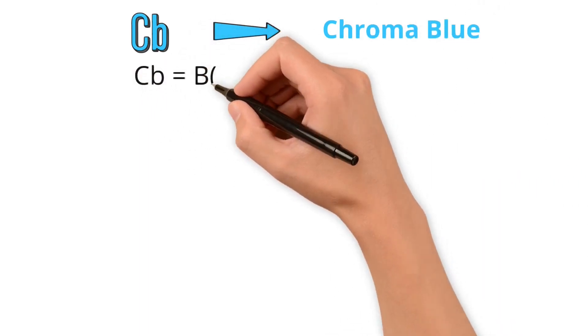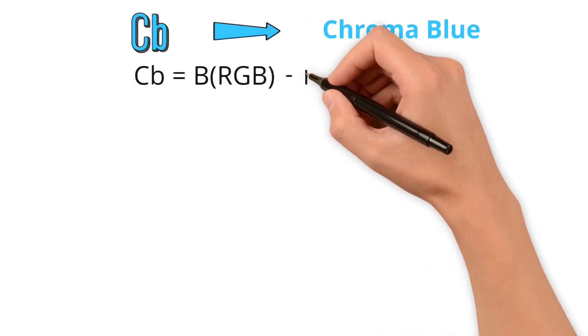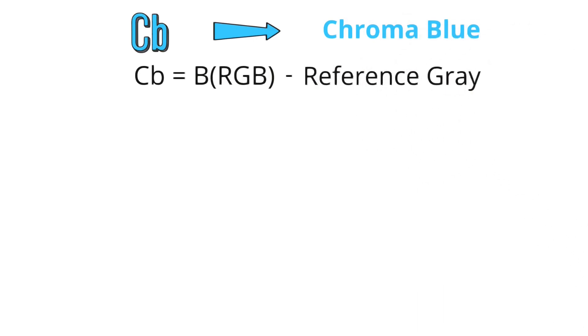Here, CB stands for chroma blue. It's the difference between the blue part of an RGB image and a reference value. This reference is typically a gray value that has equal amounts of red, green, and blue. The CB value indicates how much blue is present compared to this neutral gray.